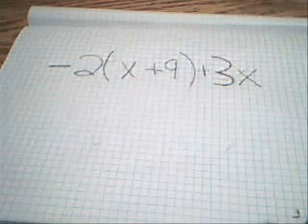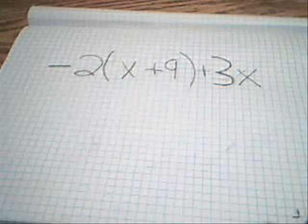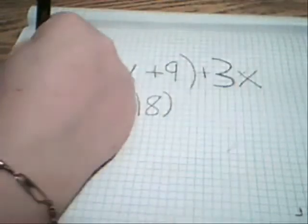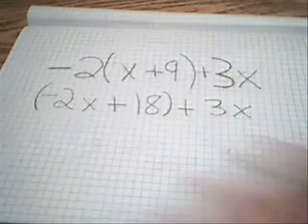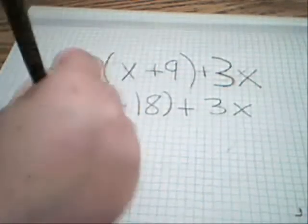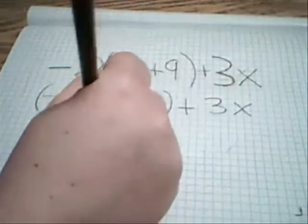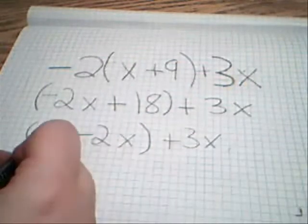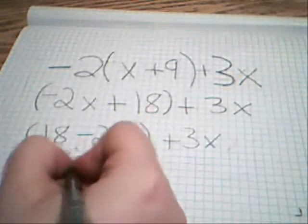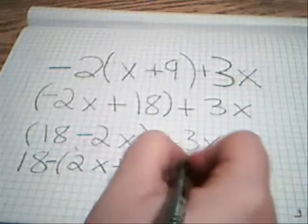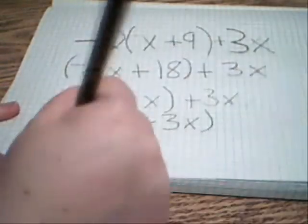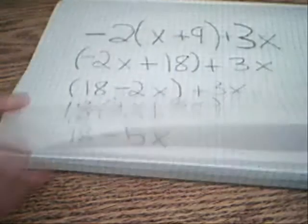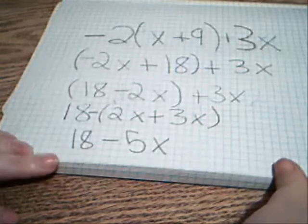Alright guys, now try out this problem and make sure to put it in standard polynomial form. First, I need to distribute. Then I need to use commutative property to flip what's in the parentheses to bring the x's together. Then I use associative property to bring the x's inside the parentheses together. Then simplify to add the x's to get my answer.